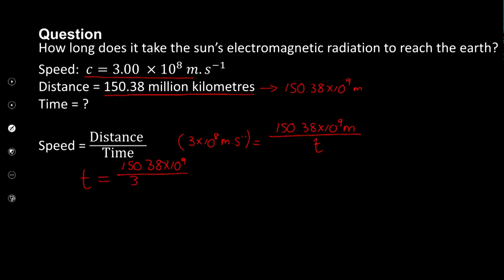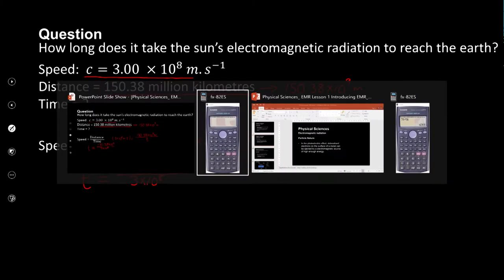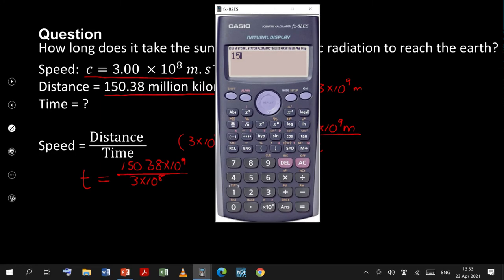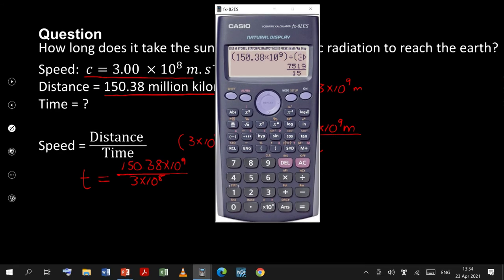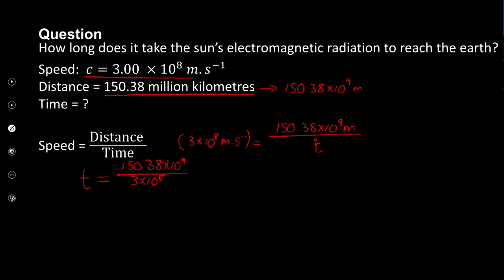We put that into the calculator: 150.38 × 10⁹ divided by 3 × 10⁸, and we get that our time value is approximately 501 seconds. 501 seconds — that doesn't seem that much, or does it? If you think about the distance we're talking about — literally millions of kilometers — then that time doesn't seem that bad.